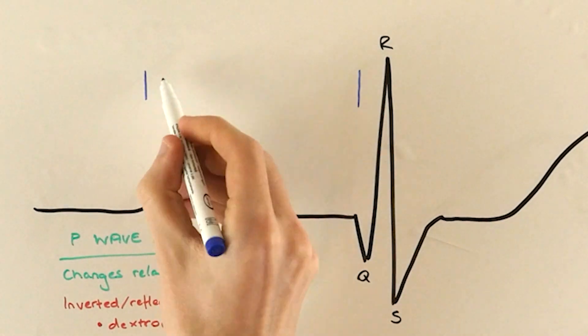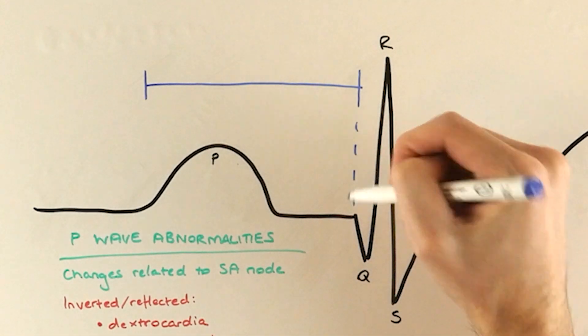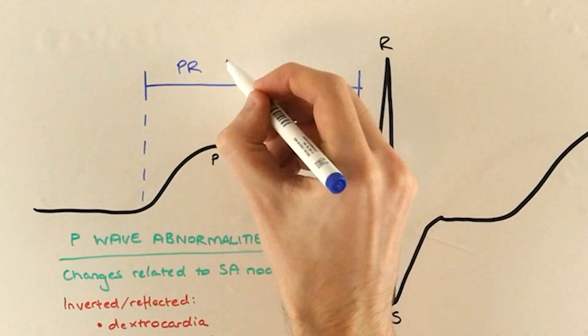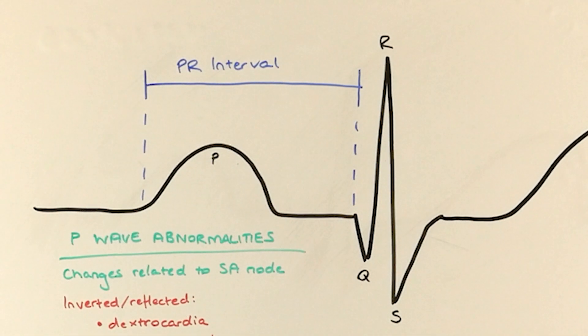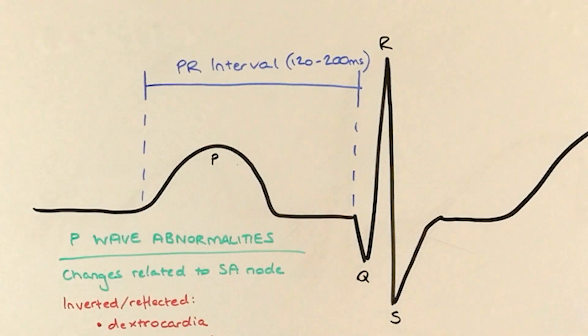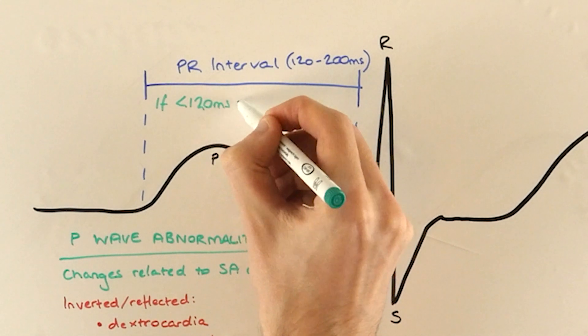Moving on to the PR interval, it's really quite simple. If it's shorter than 120 milliseconds, this suggests that the ventricles are pre-excited by the existence of another conductive pathway within the heart muscle, and they're contracting before they should.